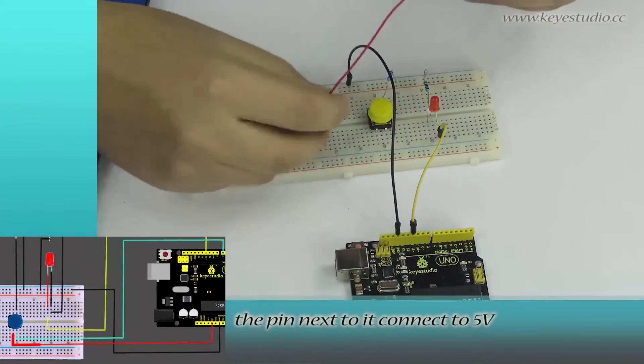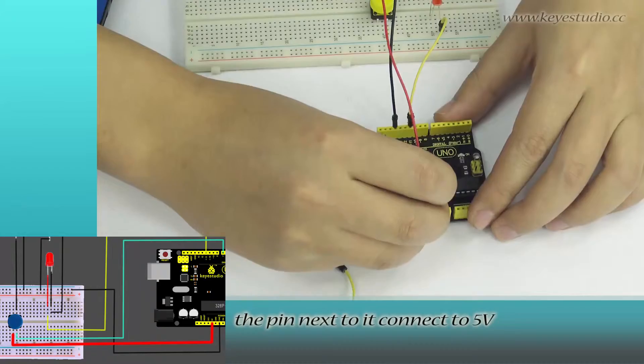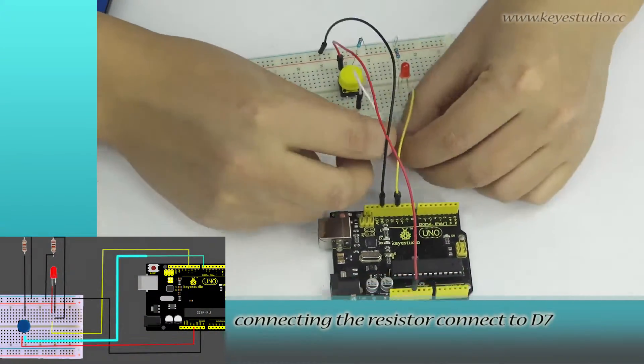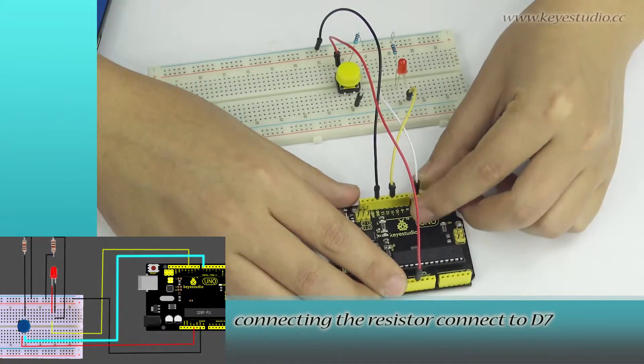The pin next to it connects to 5V. The pin on the other side opposite to the pin connecting the resistor connects to D7.